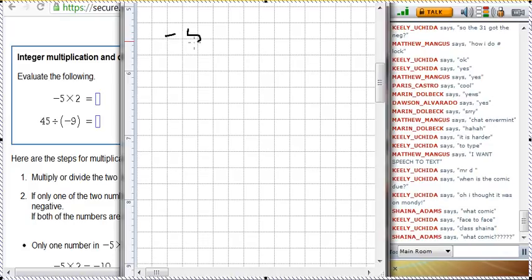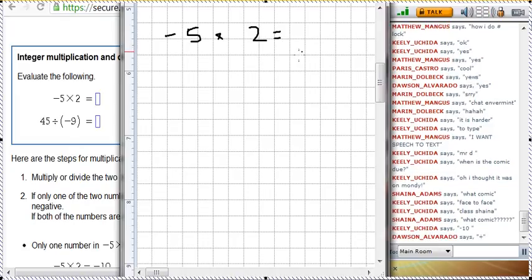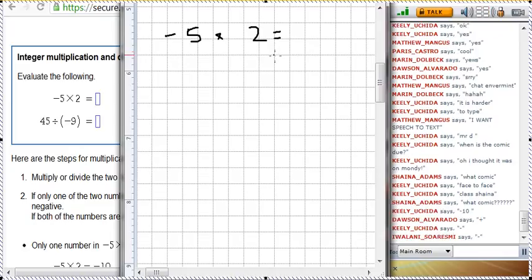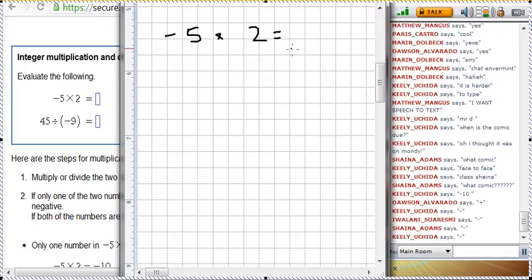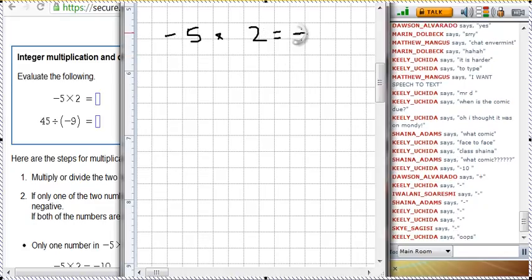So, I've got negative 5 times positive 2. First thing you deal with is what is the sign? S-I-G-N, what is the sign that this answer is going to be? Is this going to be a positive or a negative in the end? Alright, Dawson is saying positive. Keeley is saying negative. Ivalani is saying negative. Ooh, we've got more negatives coming up. And I've got a double negative from Keeley. So, I've got a negative times a positive gives me a negative.